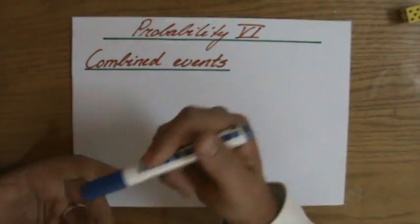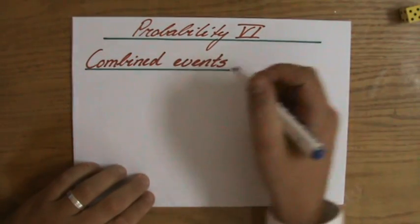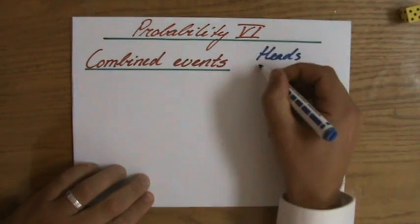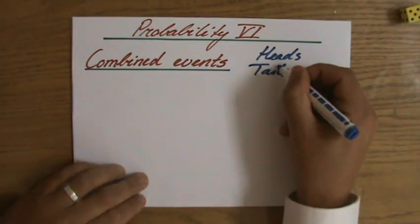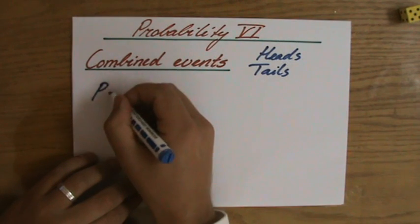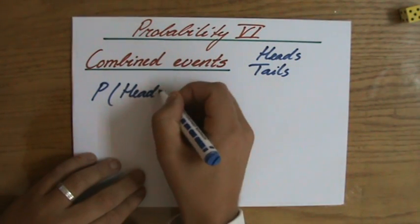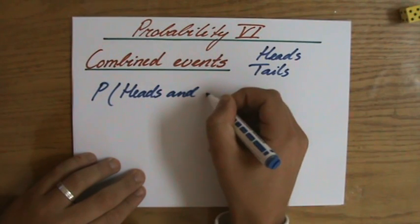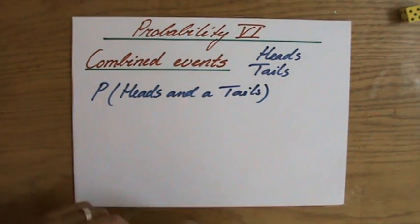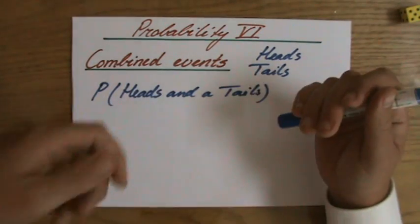But now, for instance, if I have a coin — with a coin we have heads and tails. What is the chance I throw a heads? So, what is the chance of throwing a heads and a tails when you throw it twice? So that is a combined event. There are two things happening — I do it once and then I do it again.